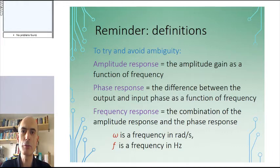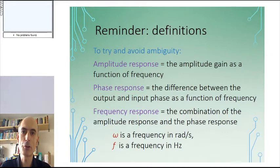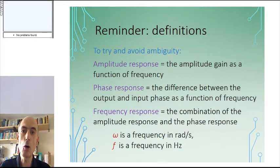I'll be using frequencies both in radians per second and in hertz in these talks. As a quick reminder, whenever I write f, I mean a frequency in hertz. Whenever I write omega, the small Greek omega, I mean a frequency in radians per second.